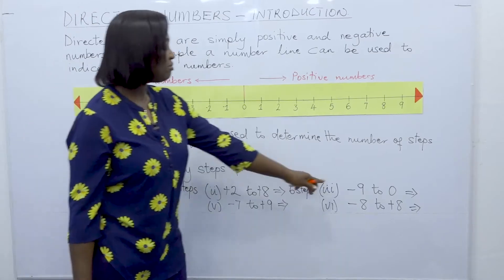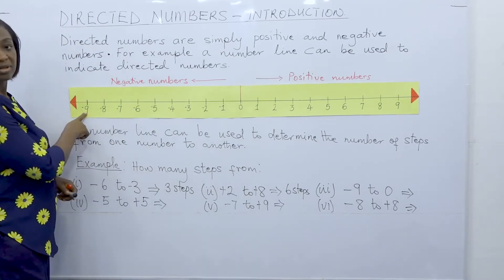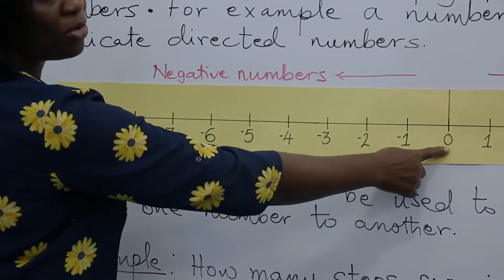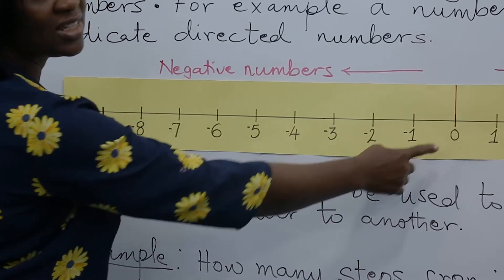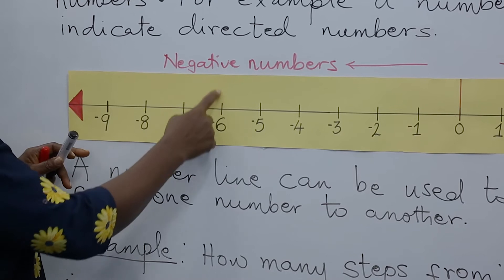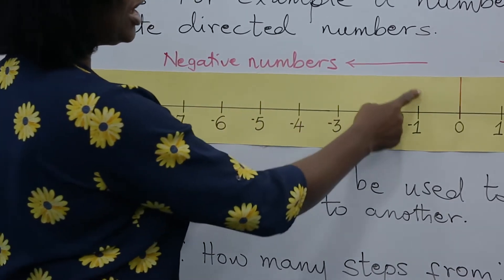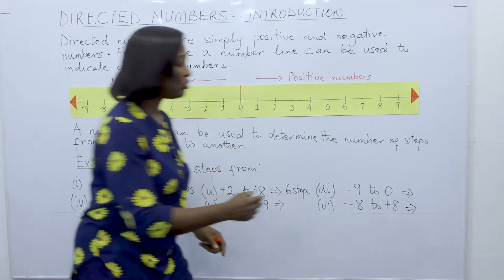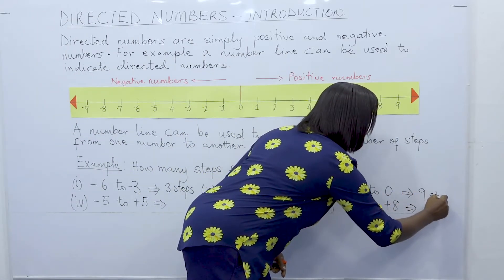From minus nine to zero — from minus nine all the way to zero, we can see there are nine steps. Counting: one, two, three, four, five, six, seven, eight, nine. So, from minus nine to zero, there are nine steps.